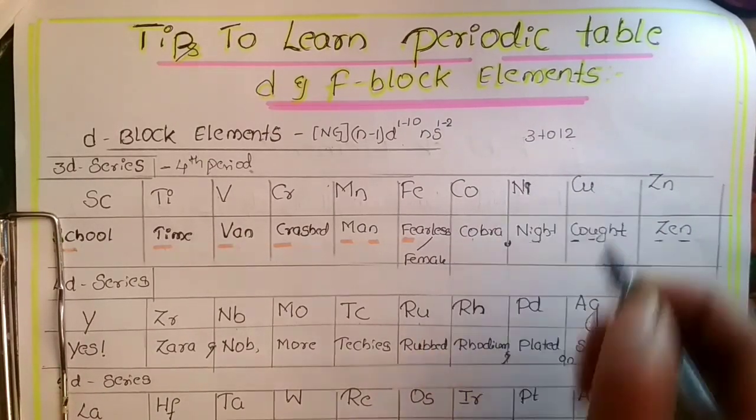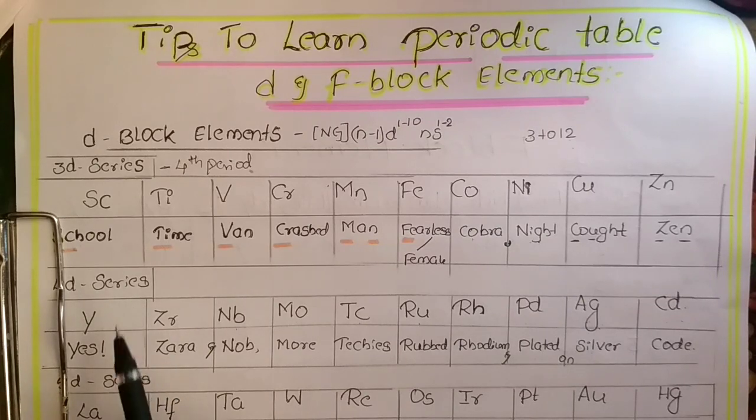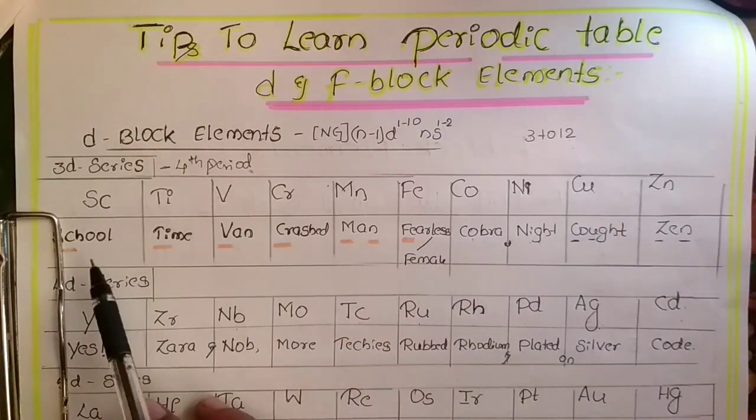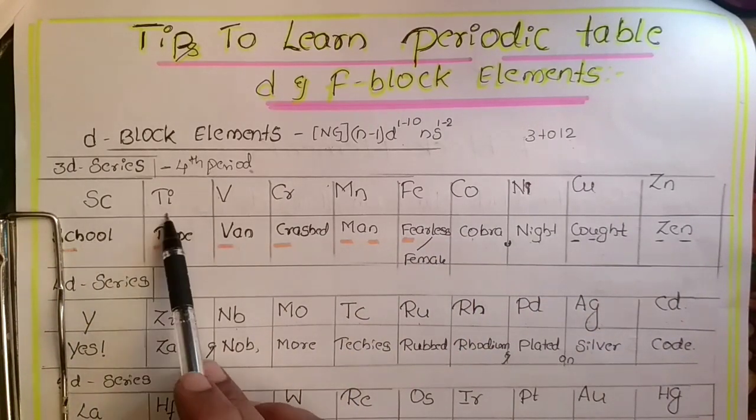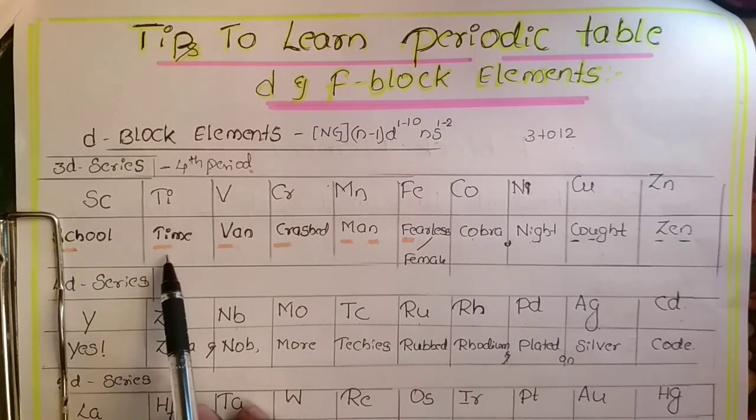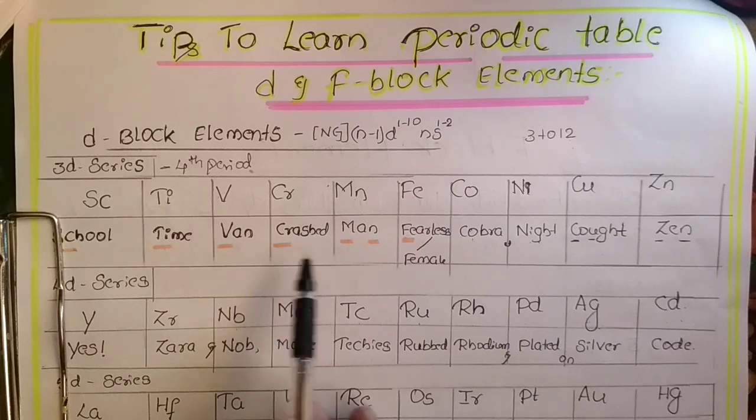You can remember this in an easy way. For your understanding I have split this into two parts. For scandium, titanium, vanadium, chromium, manganese I can use: school time van crushed man.